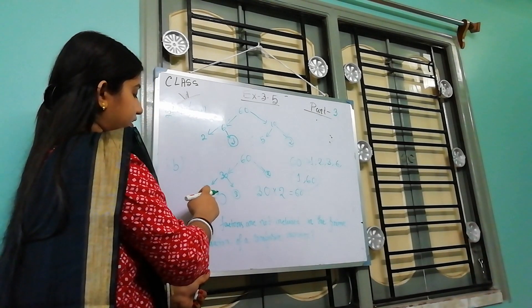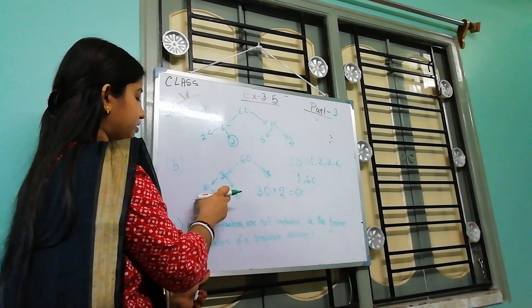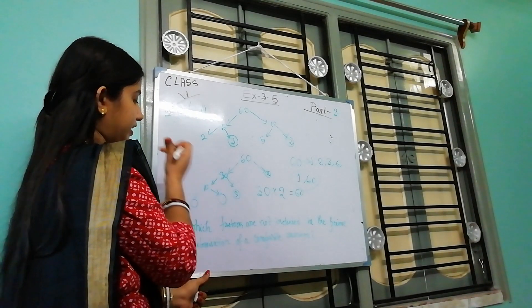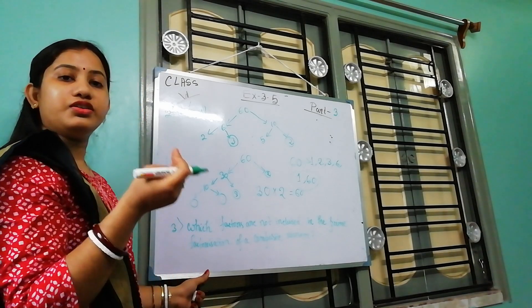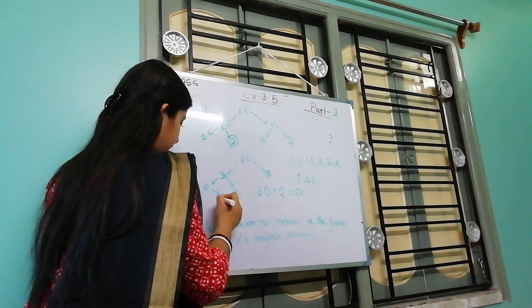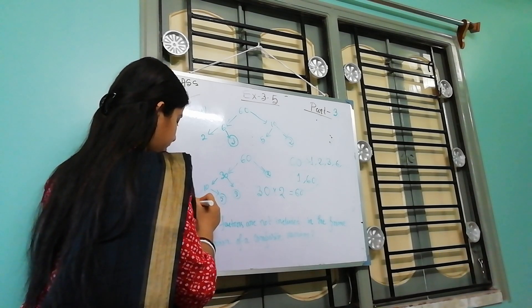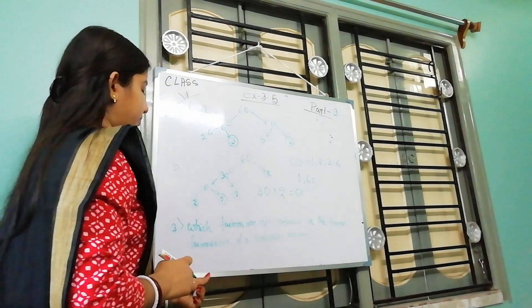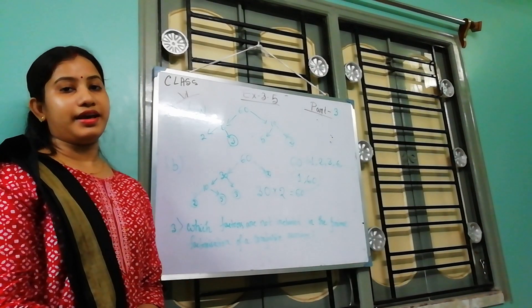Now here 10. So here is 2. And here is 5. Now you should write as this is 5 and 2, both are right. Now this is 2, and 2.